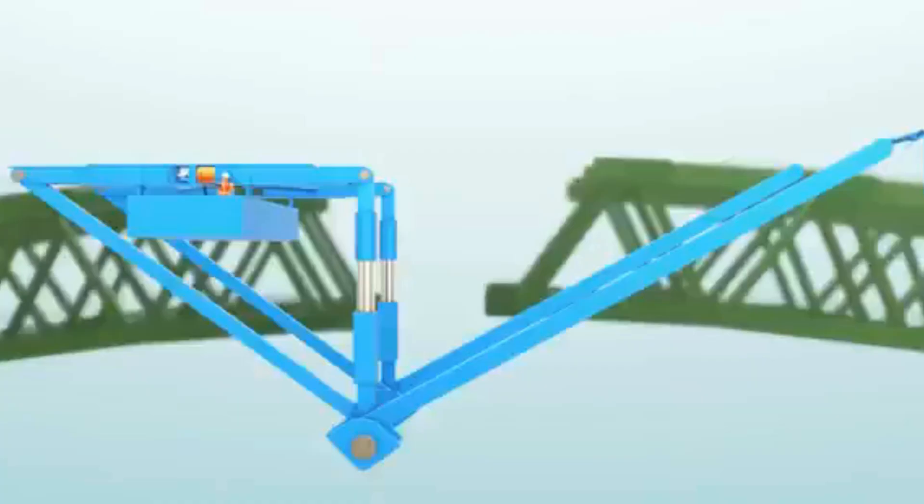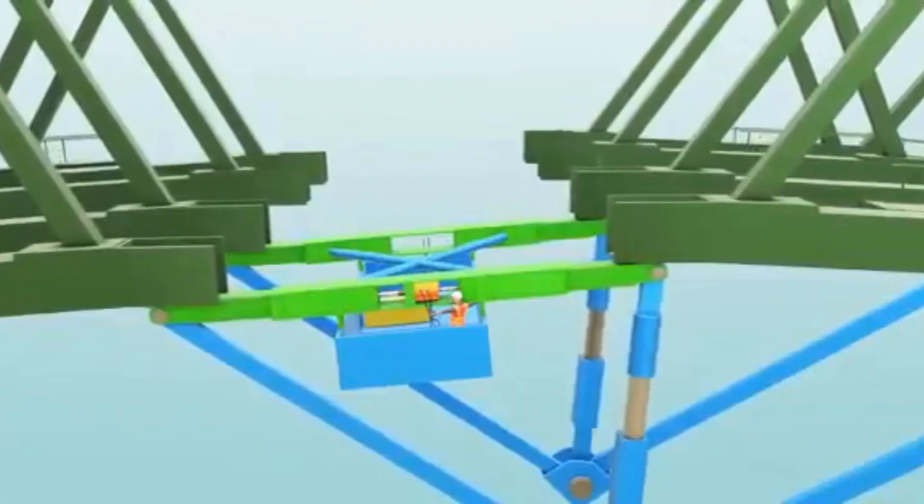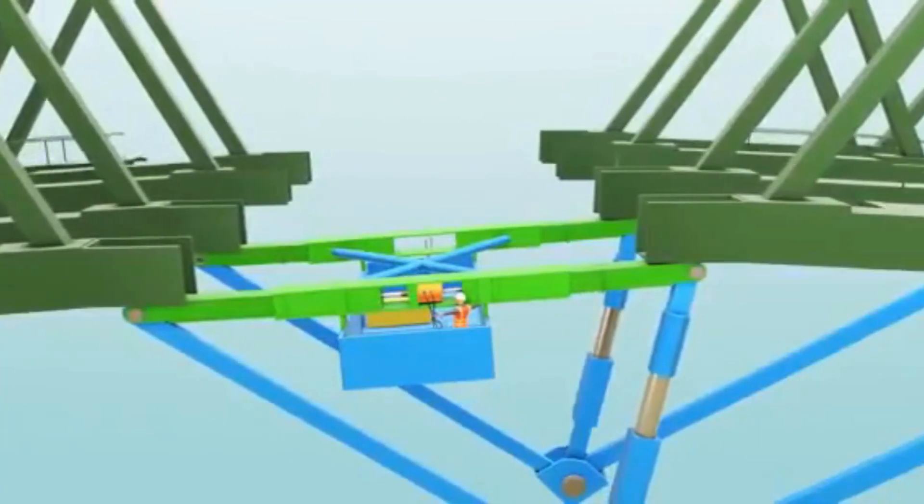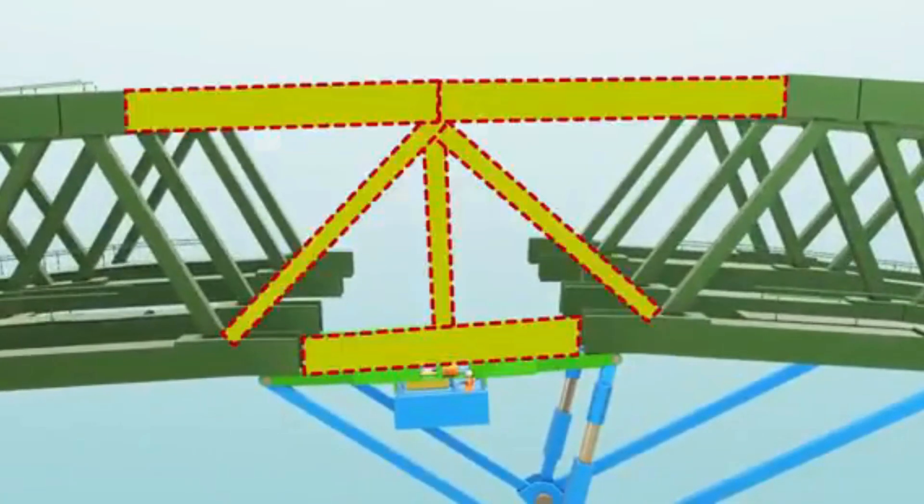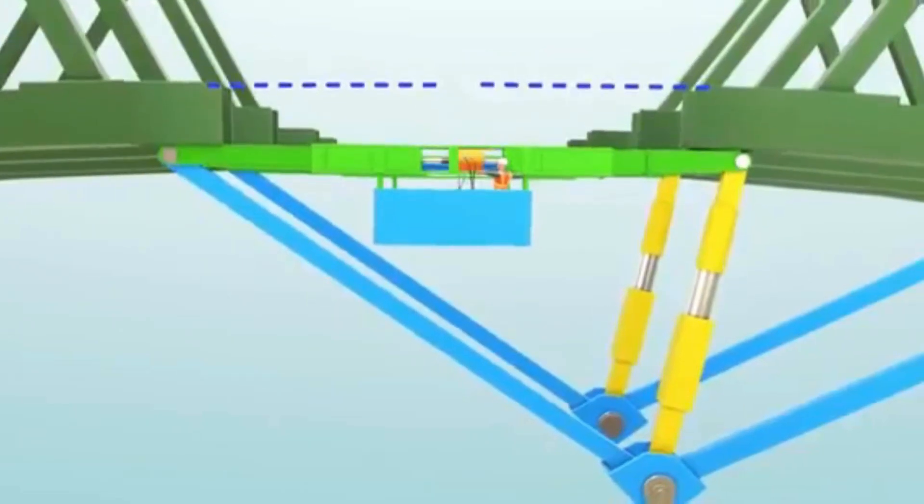This is why this special hydraulic jack is used. By adjusting the green member of the jack, the horizontal distance between the arches can be adjusted. You can see currently only six members are missing from the arch. The yellow portion helps in adjusting the vertical distance.